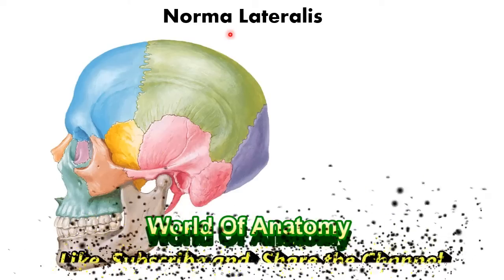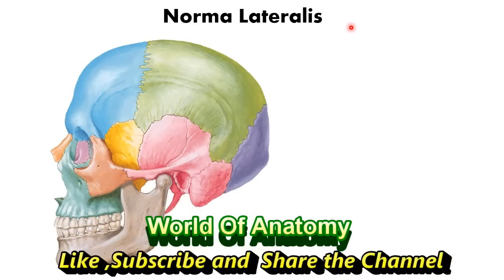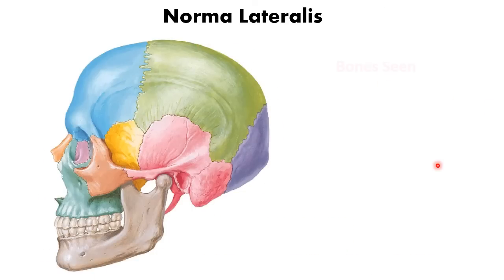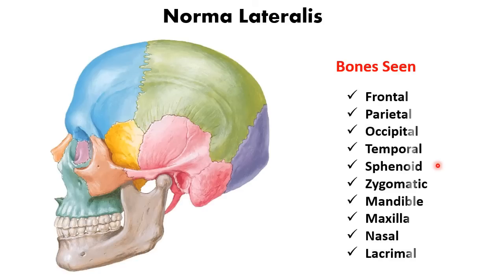Today we are going to discuss the norma lateralis — when you view the skull from the lateral aspect, this view is known as the norma lateralis. The bones you will see in this view are the frontal bone, parietal bone, occipital bone, temporal bone, sphenoid bone, zygomatic bone, mandible, maxilla, nasal, and the lacrimal bone.